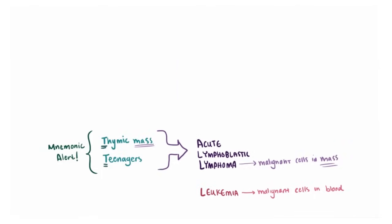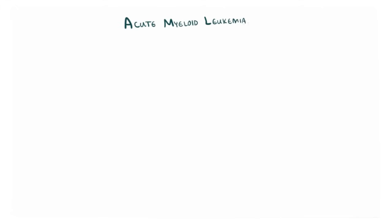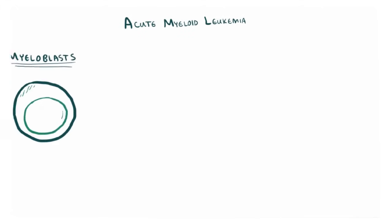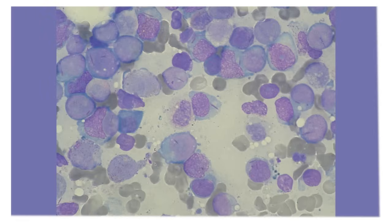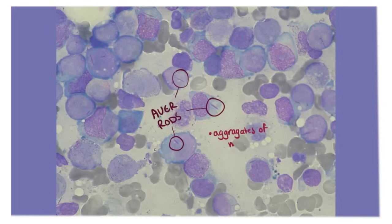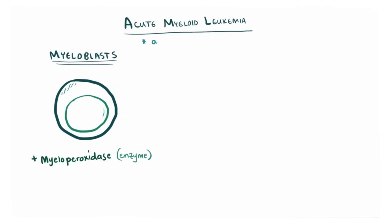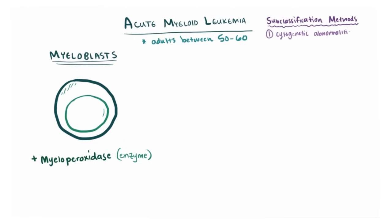That's all for the ALL type. Switching gears to AML — the accumulation of myeloblasts. Remember we're looking for the enzyme myeloperoxidase, which can present as Auer rods, like in the picture. An Auer rod is basically a crystallized aggregate of myeloperoxidase found only in myeloblasts. AML, unlike ALL, is more common in adults between the ages of 50 and 60, and can be subclassified in three ways: by cytogenetic abnormalities, the lineage of the myeloblasts, or by surface markers.